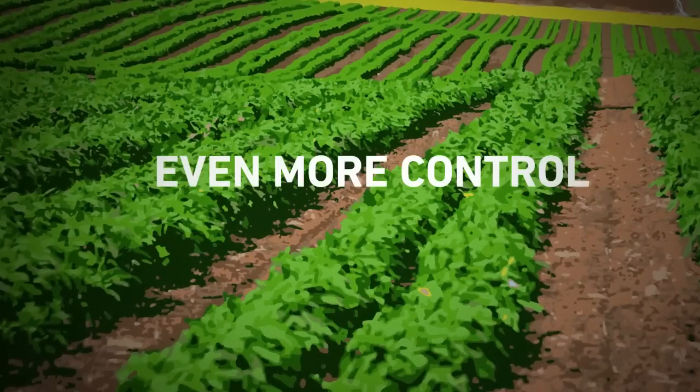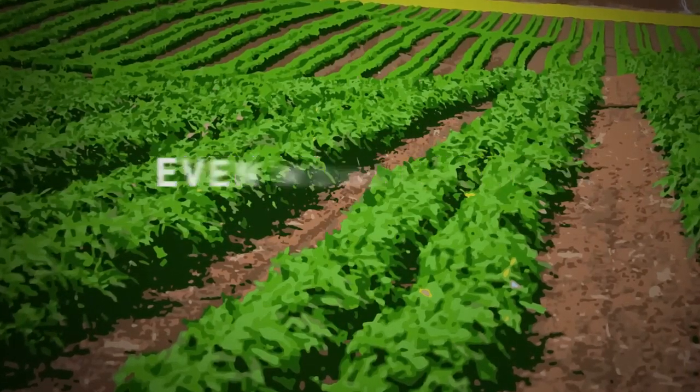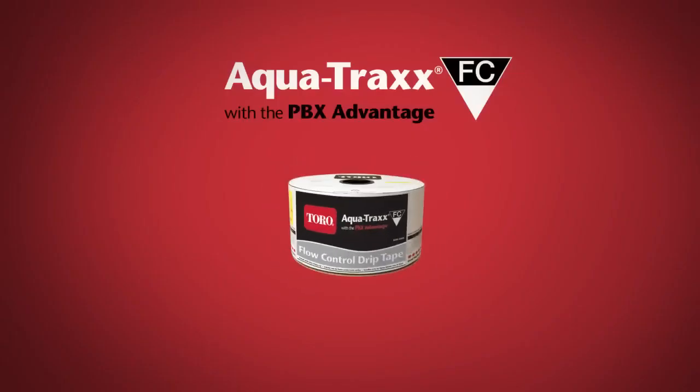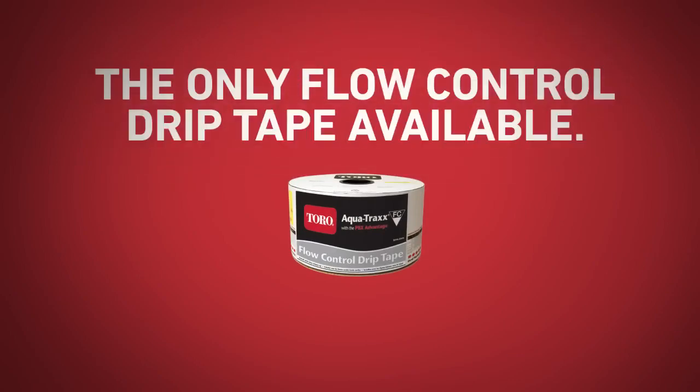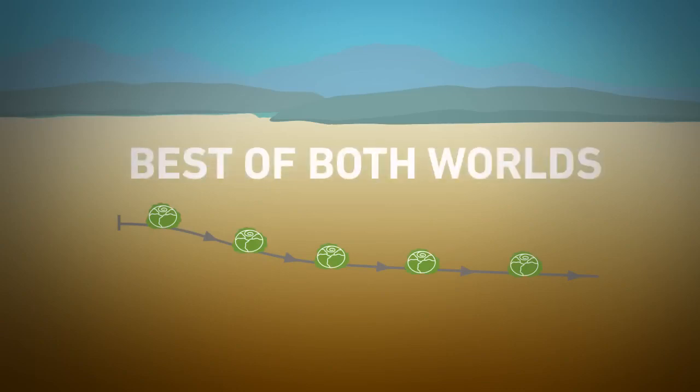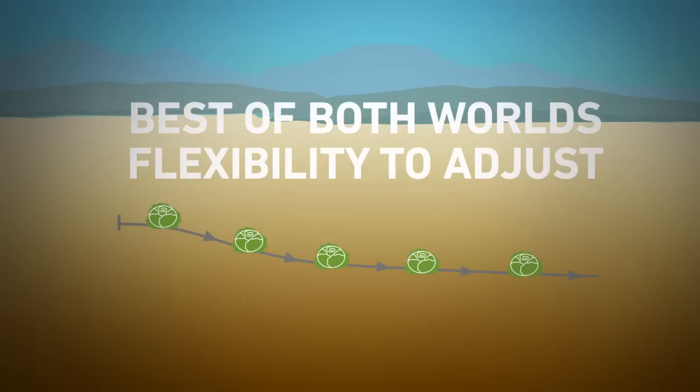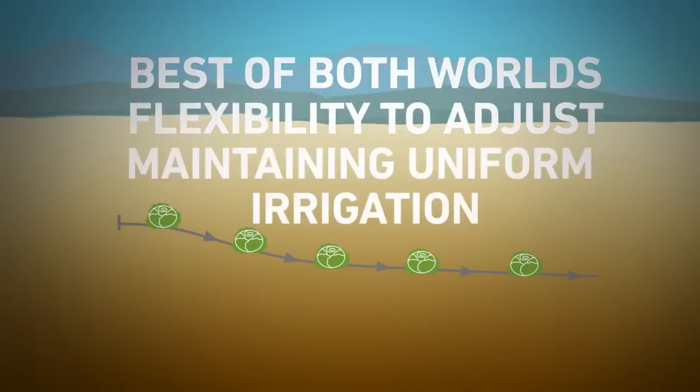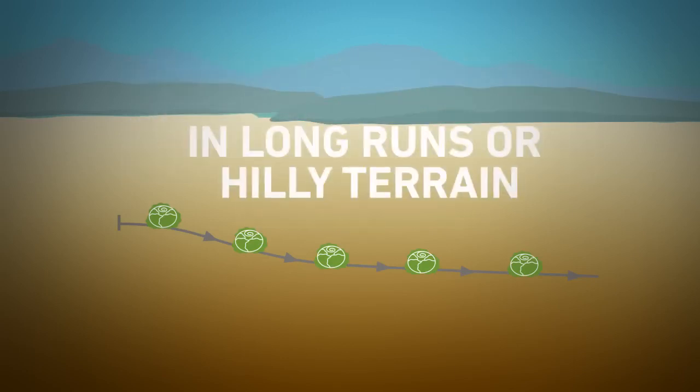For farmers who desire even more control, we've designed the all-new AquaTrax FC, the only flow control drip available. With AquaTrax FC's innovative flow control design, you get the best of both worlds: the flexibility to adjust overall irrigation application rates while maintaining uniform irrigation throughout the entire field, even in long runs or hilly terrain.